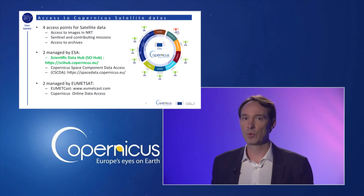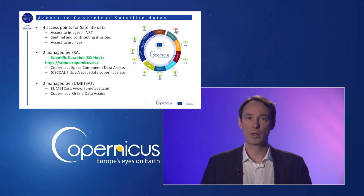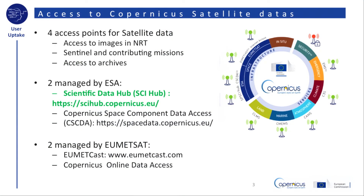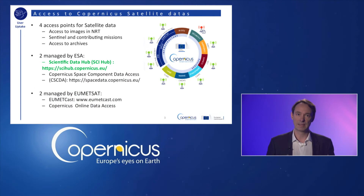This slide provides you with an overview of the Copernicus access points. There are 10 of them, 4 providing access to satellite data with access to images in near real-time or to the past archives. Over the four dedicated access points, two are managed by the European Space Agency, while the two others are handled by EUMETSAT. In this particular info session, we will discuss the Scientific Hub managed by ESA.